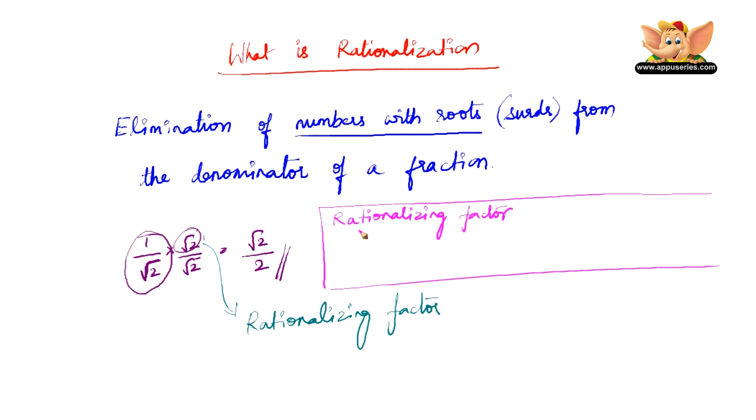To put it in simple words, rationalizing factor is the number or a factor which is going to help us eliminate the number with root from the denominator. So that number is nothing but that denominator itself, that number with root in the denominator itself.